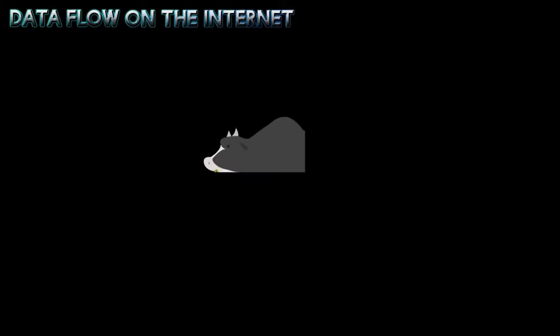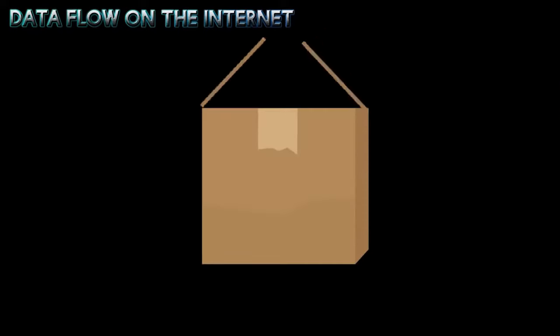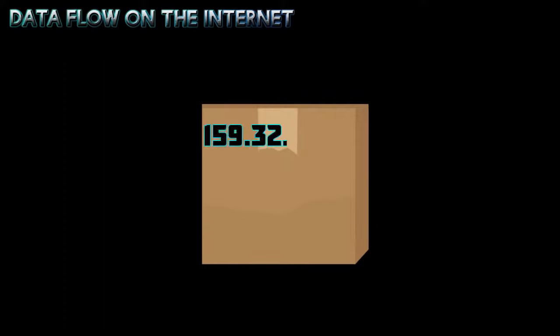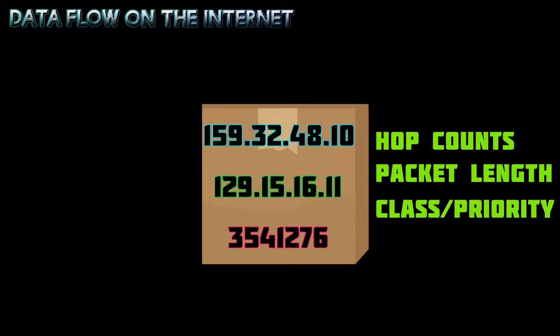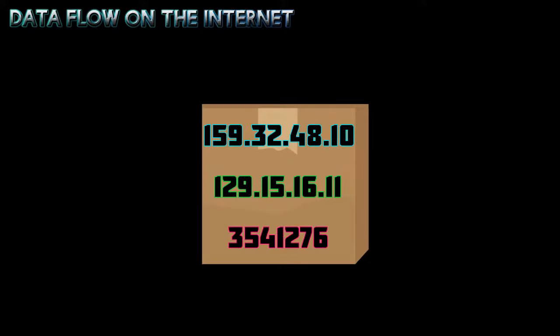Each data packet contains a piece of your original information as well as your IP address and the address for the destination computer. It may also contain a sequence number if the application you use to send the information is guaranteeing its delivery. The data packets may also contain other bits of information needed for controlling and checking their content.